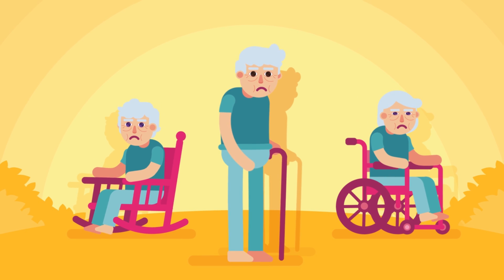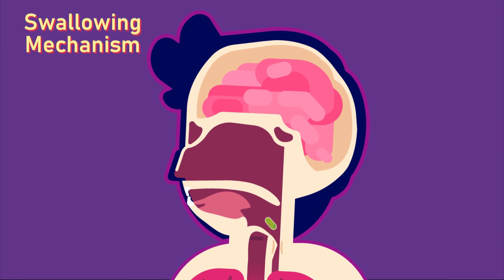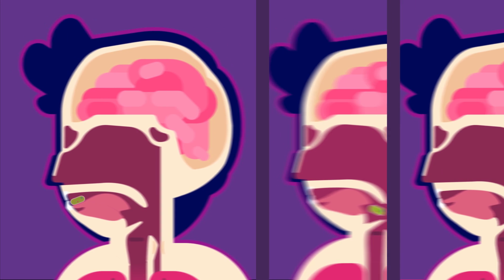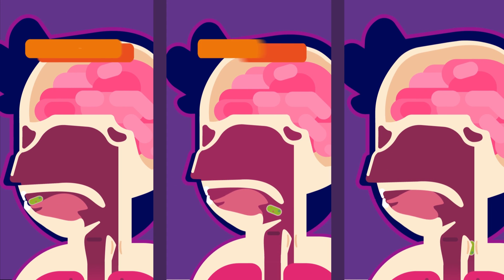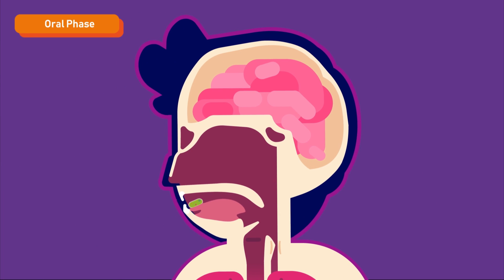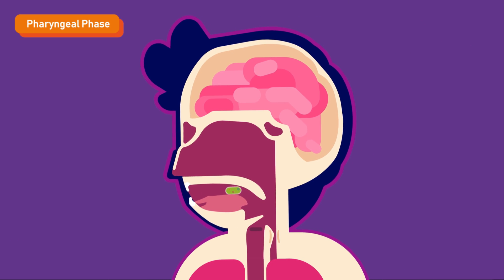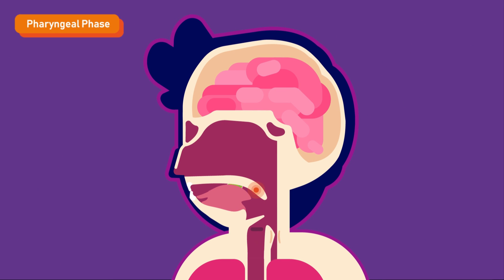The swallowing mechanism is generally divided into three phases. The oral phase, in which food is chewed and lubricated to form a bolus. The pharyngeal phase, in which movements of the soft palate, larynx, and epiglottis separate the air passage from the food passage, so that food and drink are not aspirated into the nose or trachea.